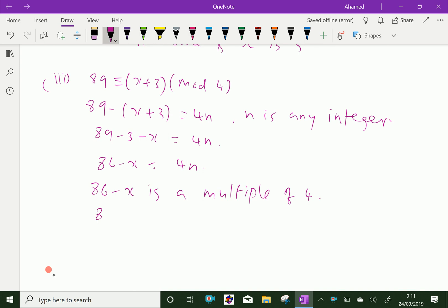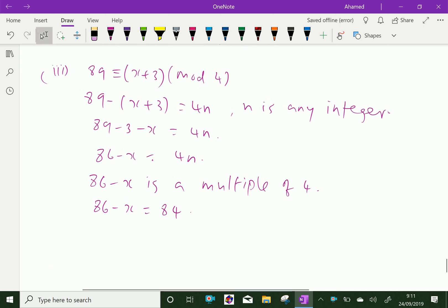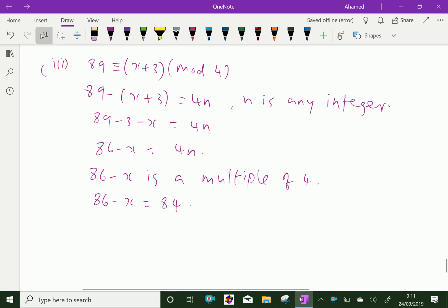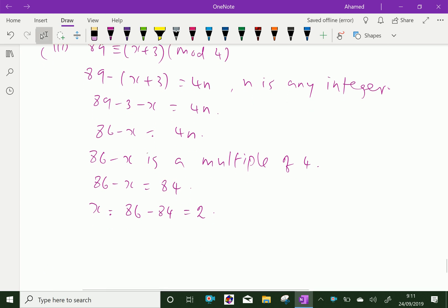Therefore, 86 minus x equals 84. Therefore, x equals 86 minus 84 equals 2. Therefore, the x value is x equals 2. We got x equals 2. We have done.